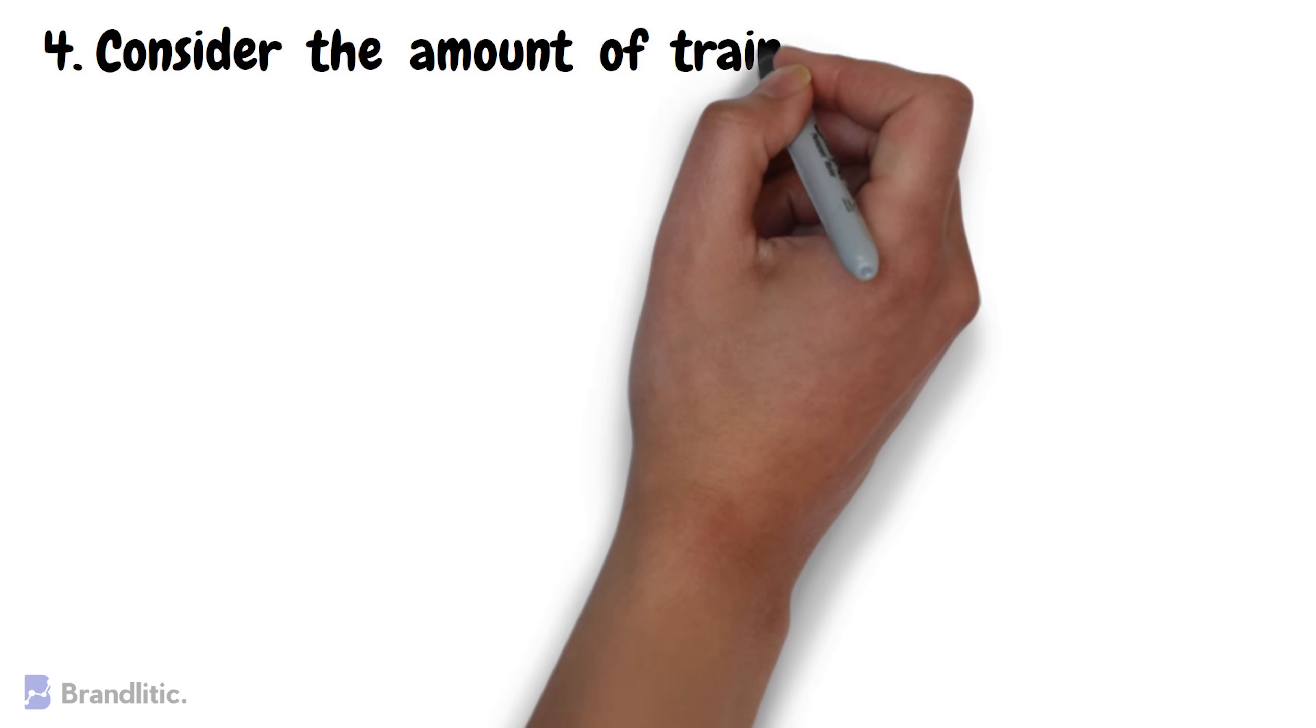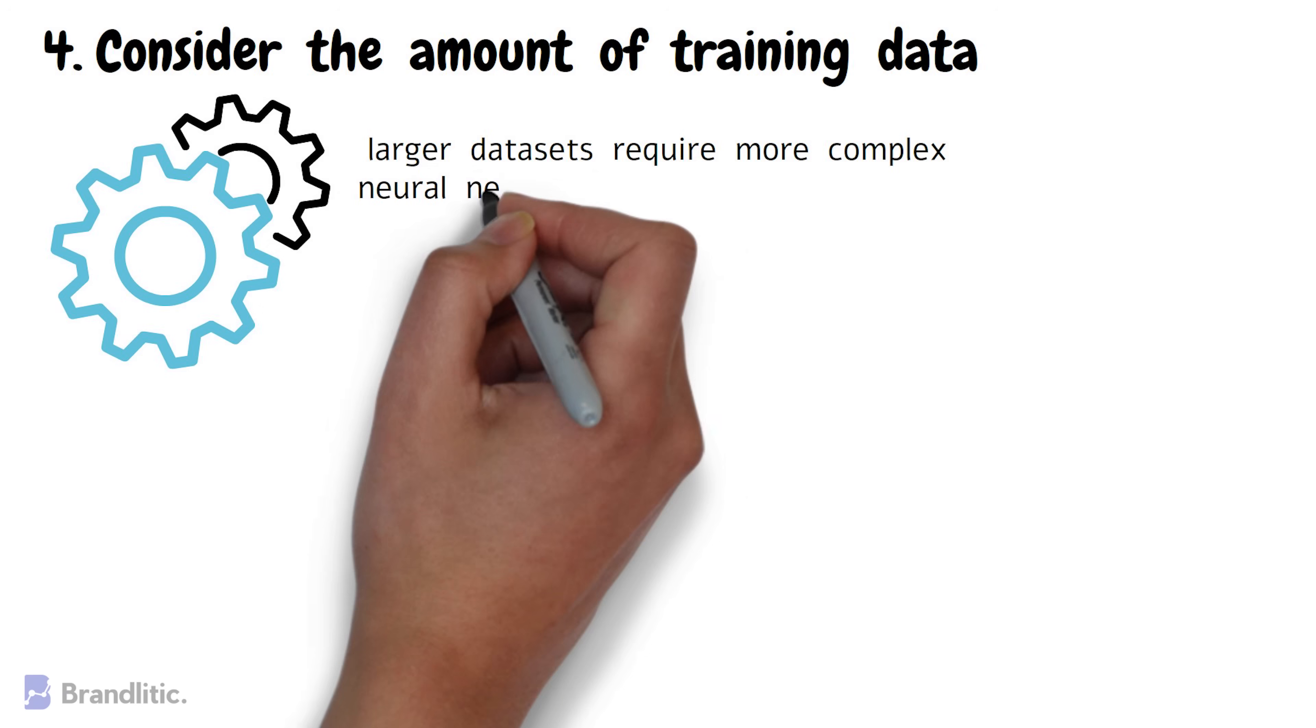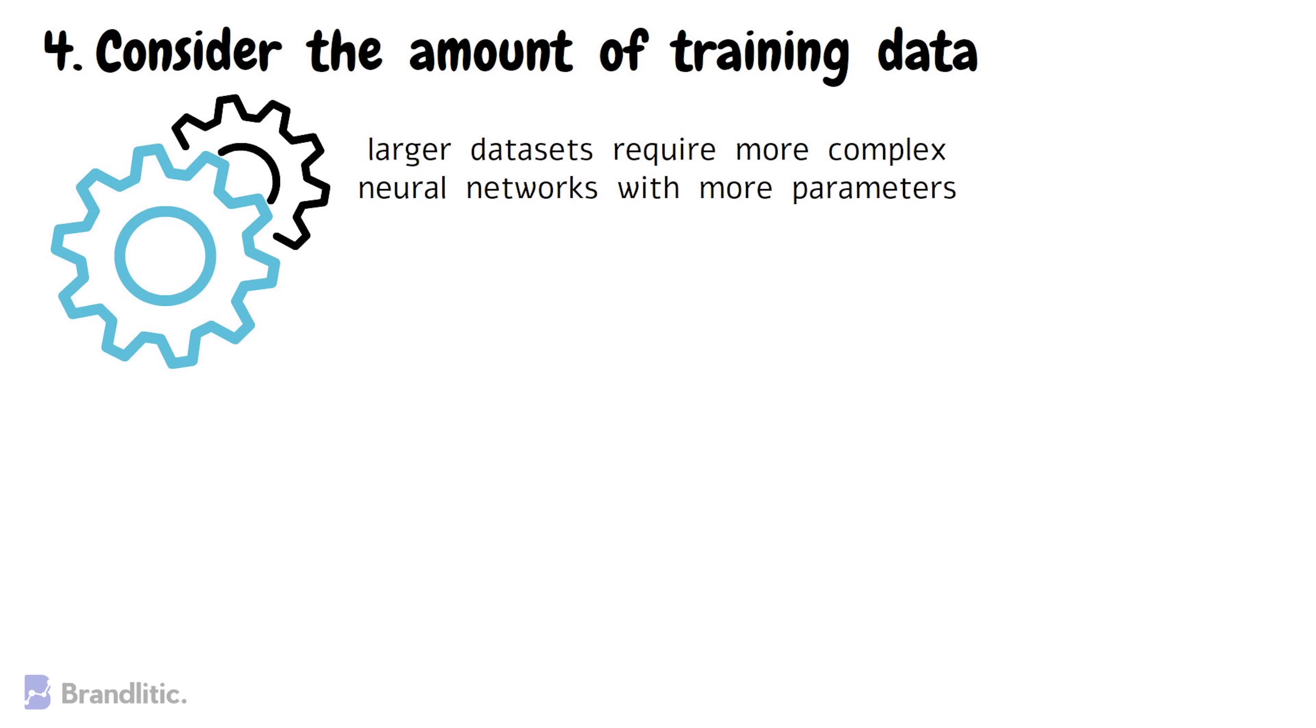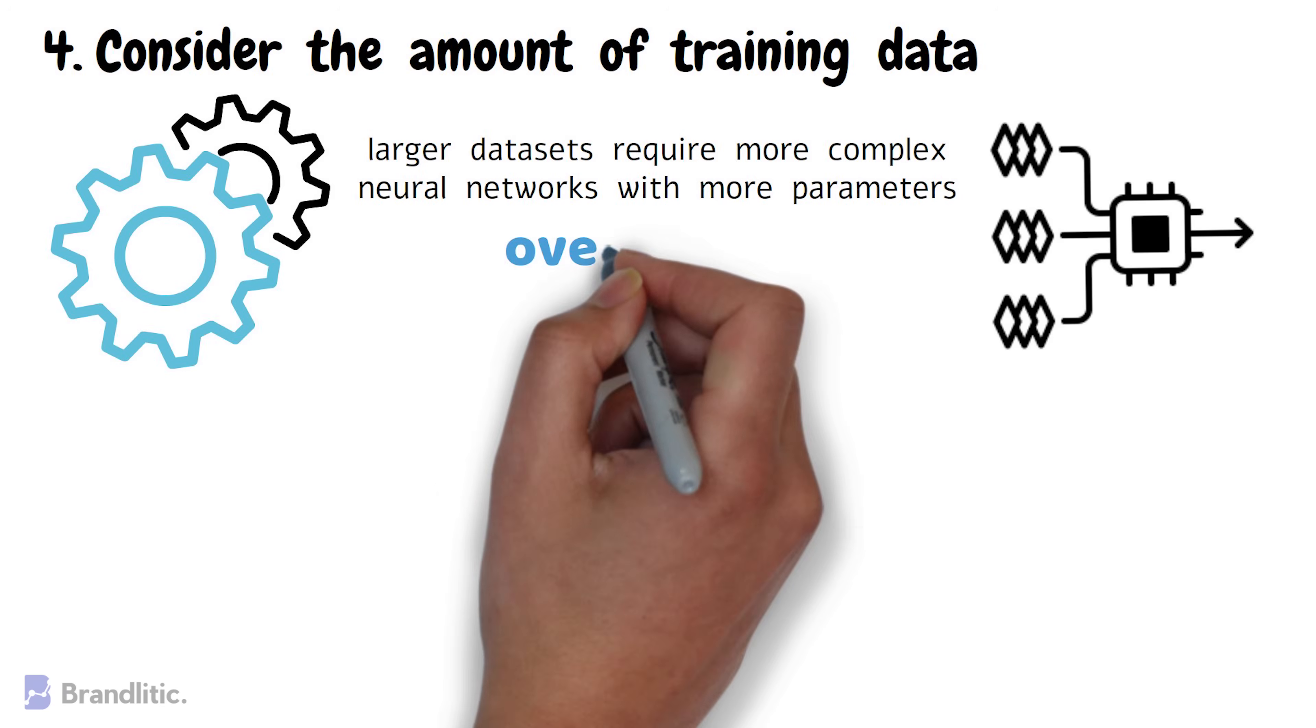Number four, consider the amount of training data. The amount of training data that you have available also plays a role in choosing a neural network. Generally, larger datasets require more complex neural networks with more parameters. However, if you have a relatively small amount of training data, you might want to use a simpler neural network to avoid overfitting.